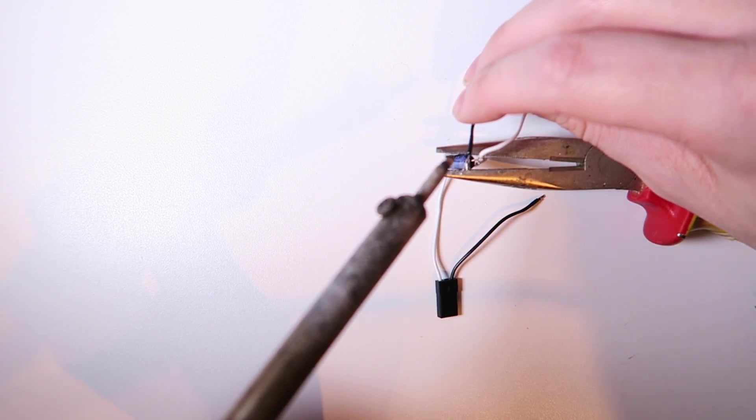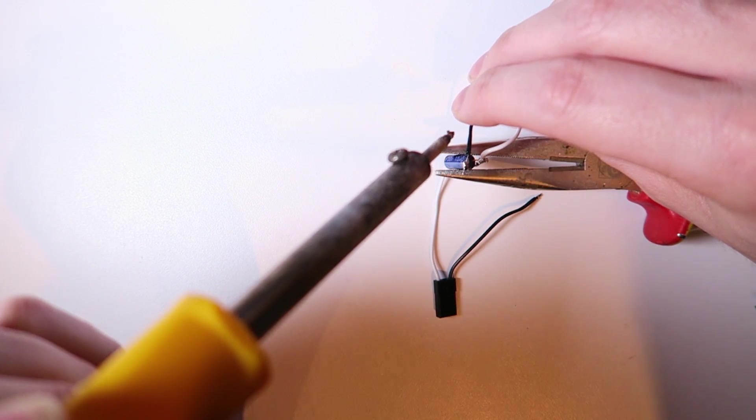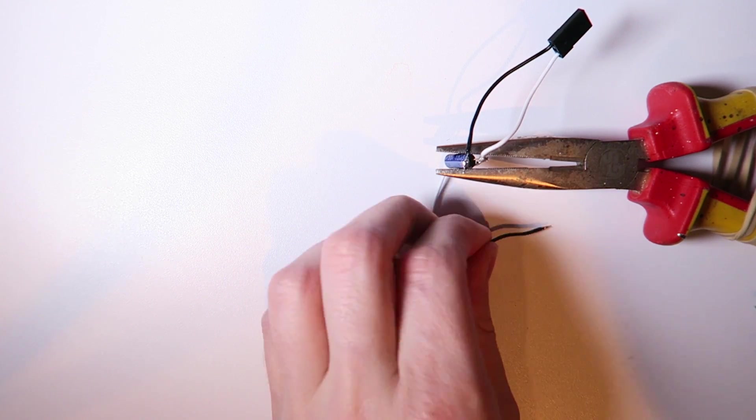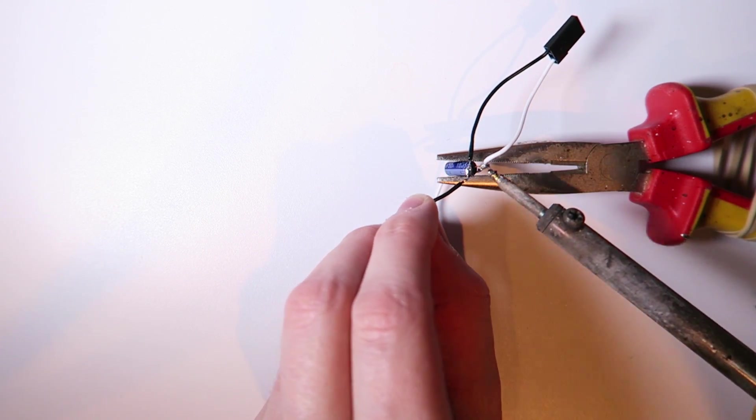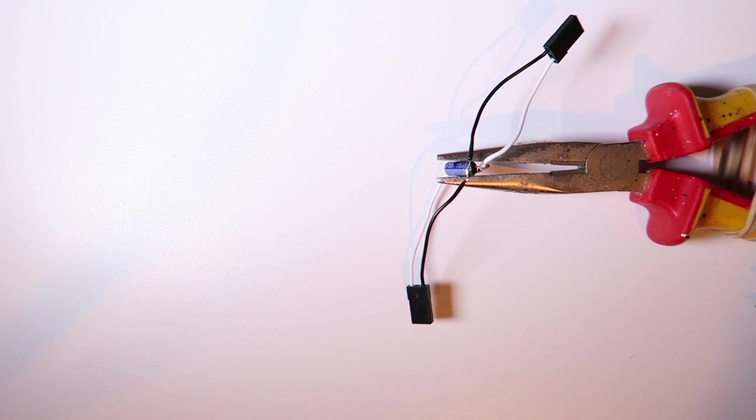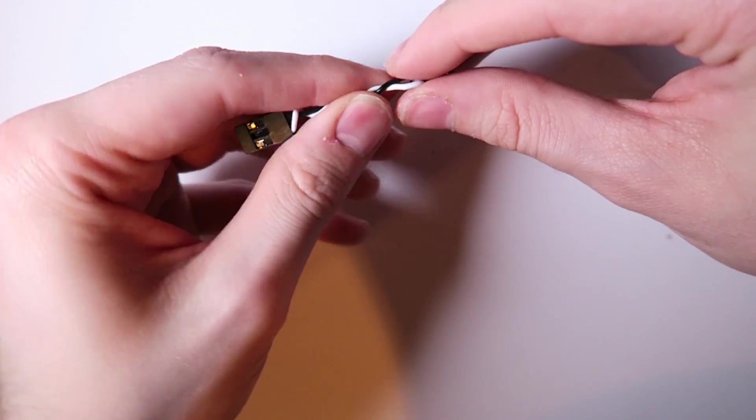And now I'm going to do the same with the ground wire. You can see there, we've got that line down the side of the capacitor, that is the negative side of the capacitor. Again, I've left myself just enough room so that I can solder both wires onto the leg and it doesn't fall off when I solder it.